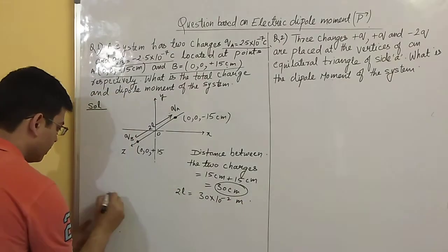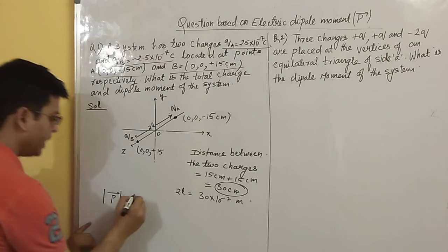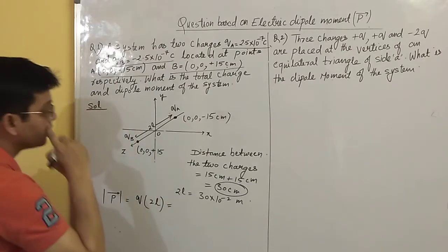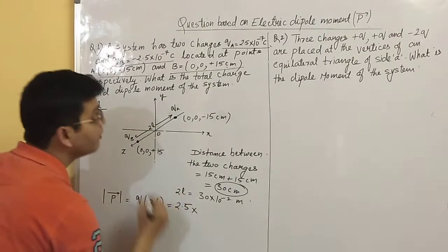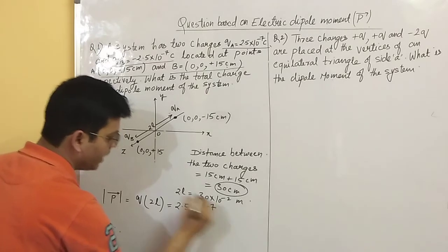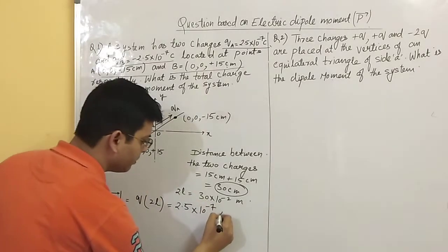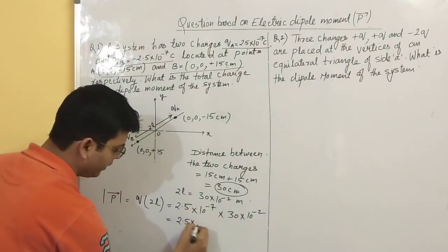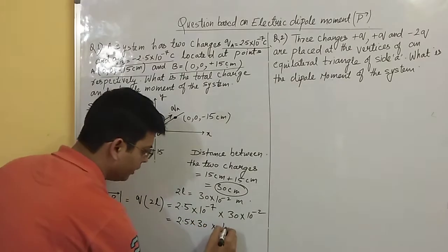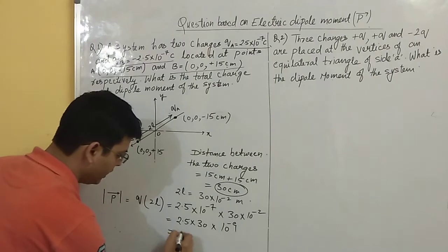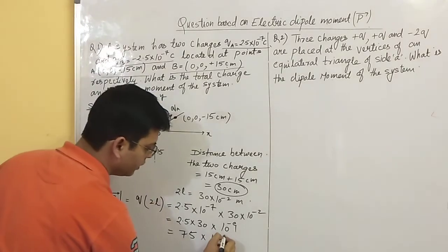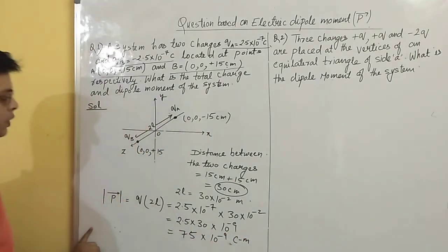For the dipole moment calculation, either of the charges has magnitude 2.5 into 10 to the power minus 7. Multiplying by the distance 30 into 10 to the power minus 2, we get 2.5 into 30 into 10 to the power minus 9, which equals 75 into 10 to the power minus 9. The unit is Coulomb meter.